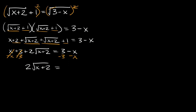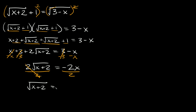After subtracting x and 3, we're left with 2 times the square root of x plus 2 equals negative 2x. Now we can divide both sides by 2, giving us the square root of x plus 2 is equal to negative x. Now that we've isolated the radical, we can square both sides. The square root and the squared exponent cancel, leaving x plus 2 equals x squared.